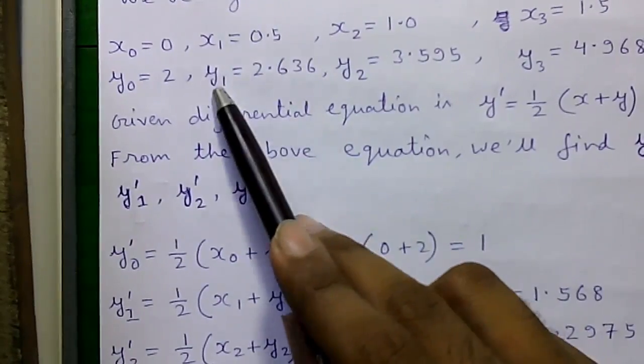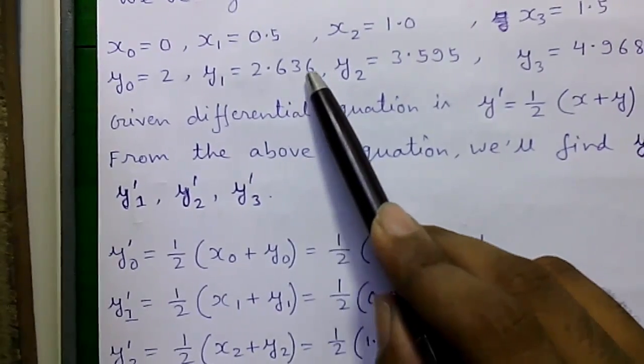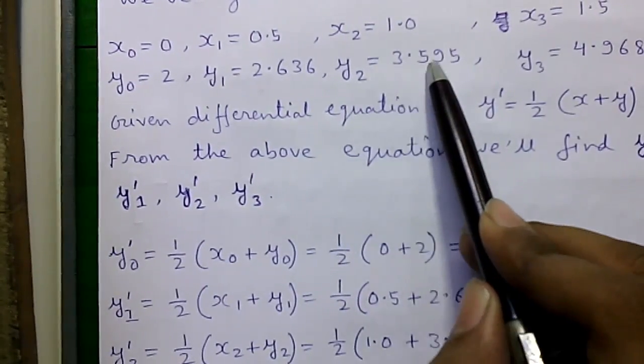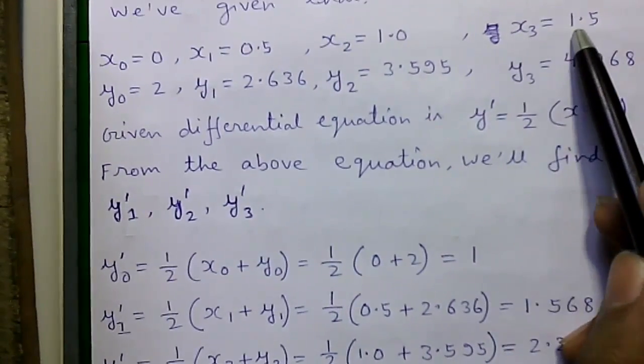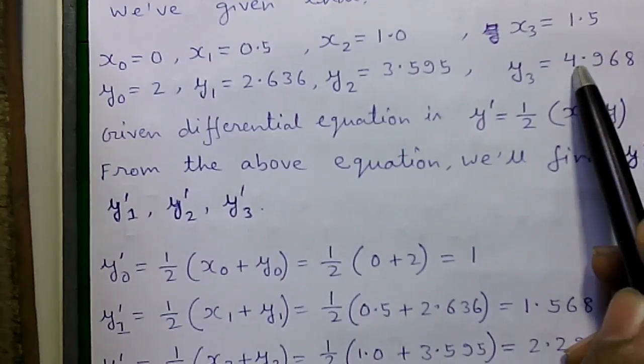x1 is 0.5, y1 is 2.636, x2 is 1.0, y2 is 3.595, x3 is 1.5 and y3 is 4.968.